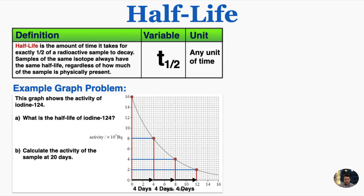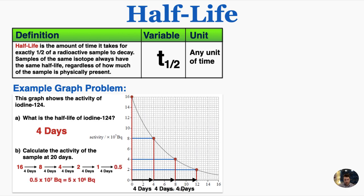To find the activity at 20 days, I take 16 and after four days it's at 8 — that's one half-life. Then 8 days, 12, 16, 20. So I can see that the final activity will be 0.5, and the unit on the y-axis of the graph is multiplied by 10 to the 7th Bq. So my final answer is 0.5 × 10⁷ Bq, or 5 × 10⁶ Bq in correct scientific notation. That's everything that you need to know about radioactive half-life.